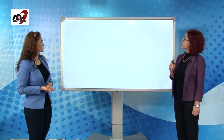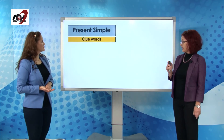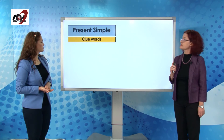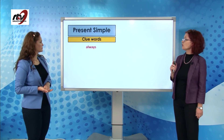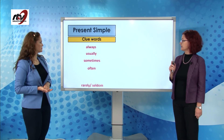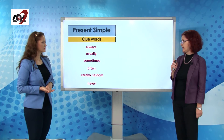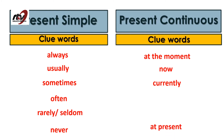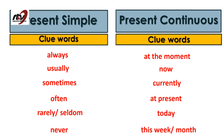This is it about the rules. Now let's take a look at them together — present simple and continuous. The clue words for present simple are: always, usually, sometimes, often, rarely, seldom and never — these are called frequency adverbs. For present continuous we have: at the moment, now, currently, at present, today, and this week or this month.